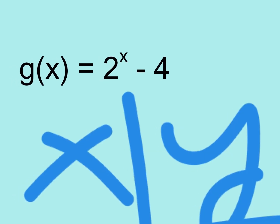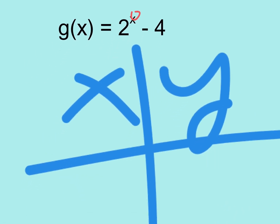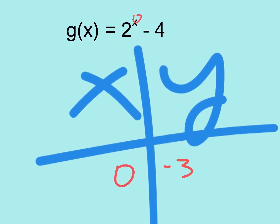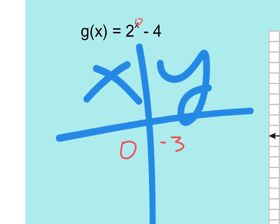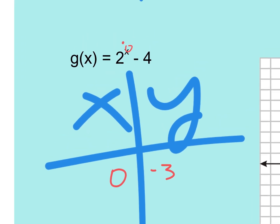Let's just put in the first number I think of: zero. Is zero a decent number to put in? Two to the zero is one; one minus four gives negative three. So I put in zero and got negative three. How about putting in two? Two makes it equal to zero — so two comma zero is just a spot on the graph. Is there any way to make this function fail?